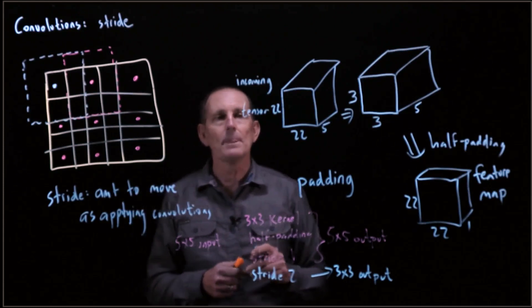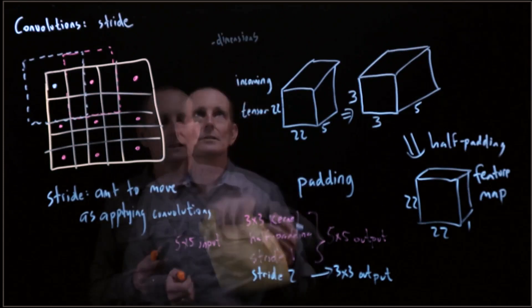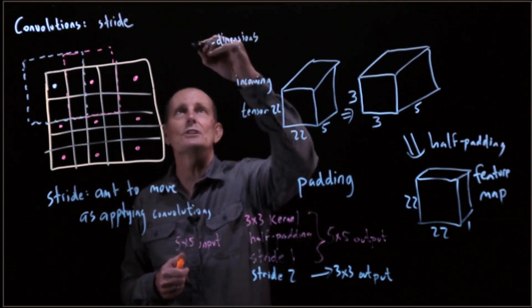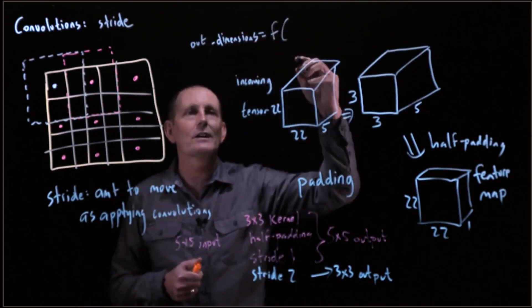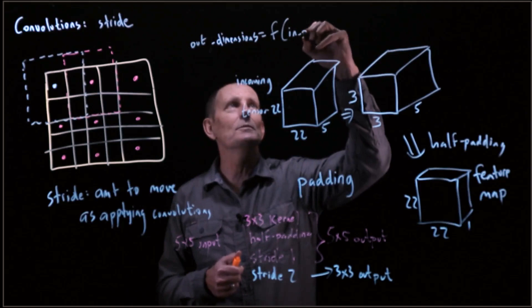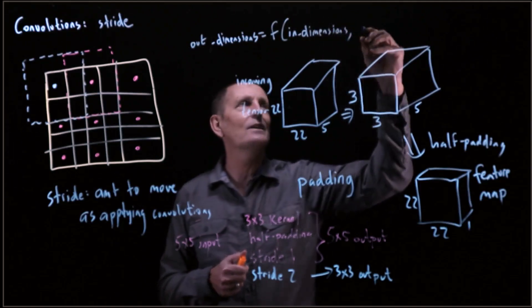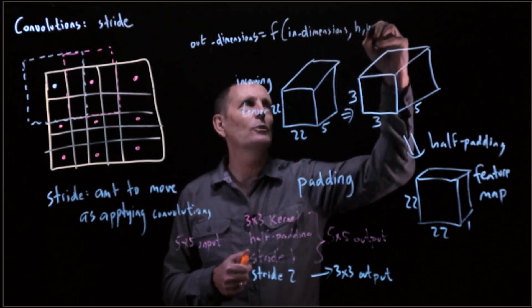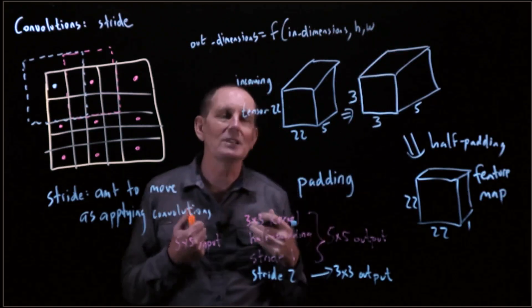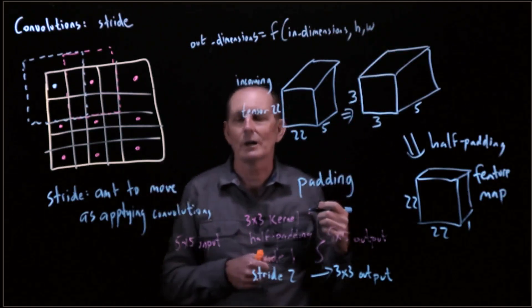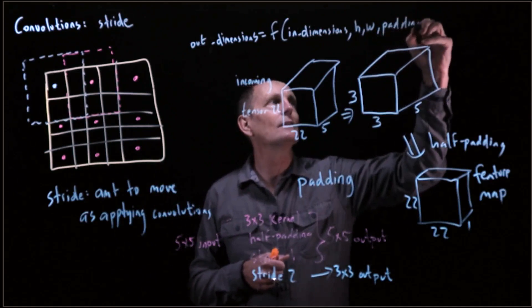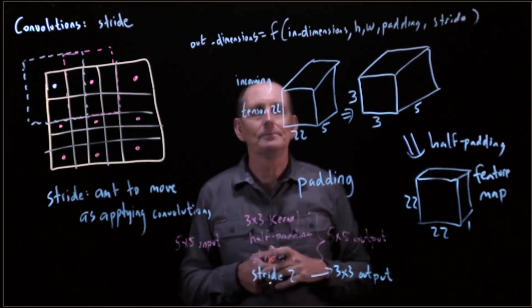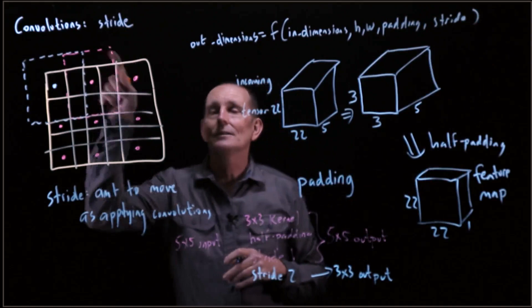A non-1 stride is going to actually have us reducing the dimensions. When we look at the new dimensions, let's look at what we call the output dimensions. The output dimensions are a simple function of the input dimensions and what? The height and width of the kernel, because theoretically they could be different, although in practice everyone uses square kernels, and padding and the stride.